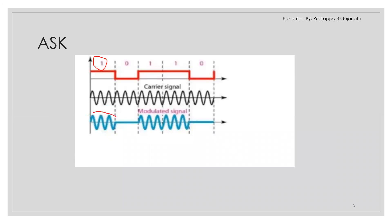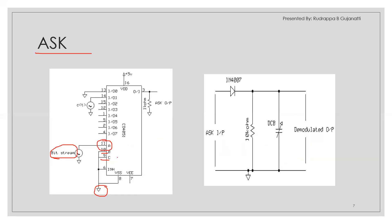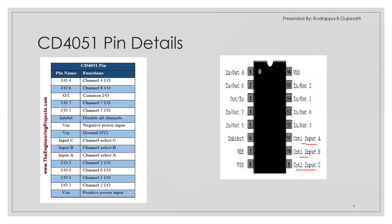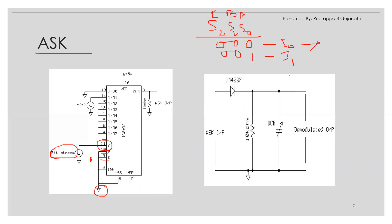In ASK: if data is one, the carrier is presented; if zero, the carrier is suppressed. Pins S2 and S1 are always held at zero, and only S0 changes with the bitstream. When S0 is zero (i.e., 000), I0 is selected, which corresponds to pin 13 — and pin 13 is grounded. So when data is zero, pin 13 is selected and the output is zero, meaning the carrier amplitude is suppressed.